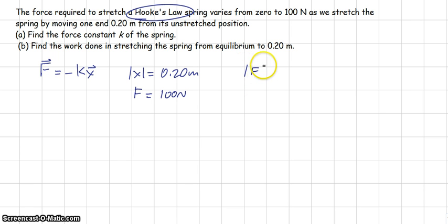Therefore, the magnitude of the force is equal to k times the magnitude of the displacement. 100 newtons equals k times 0.2 meters. So that means k is 100 divided by 0.2, or 500 newtons per meter. So that was part A.